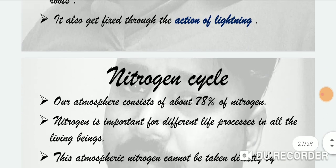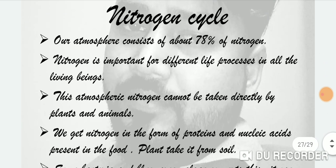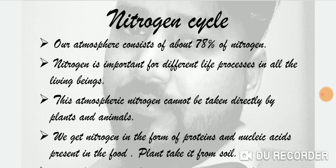Now we come to the next topic: the nitrogen cycle — how nitrogen circulates in our surroundings, how it is used by plants, how it is beneficial for animals and soil, and how it converts back to nitrogen. Our atmosphere consists of about 78% nitrogen, which is important for different life processes in all living beings.